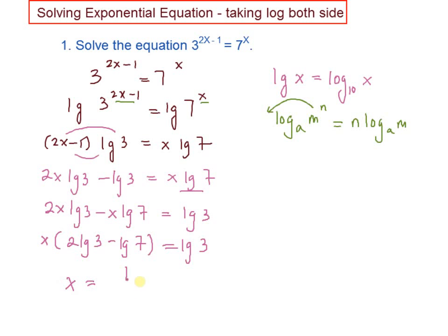Therefore, your answer for x equal to log 3 divided by 2 log 3 minus log 7. This equal to 4.371.